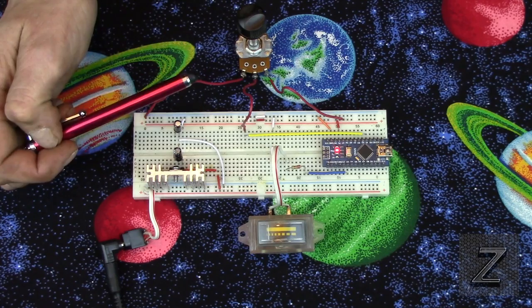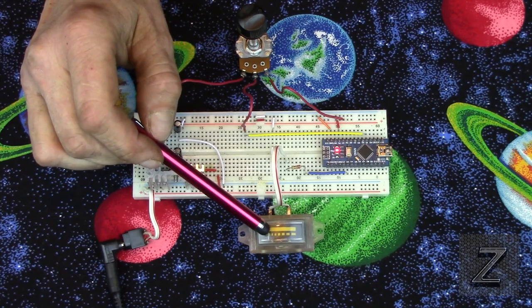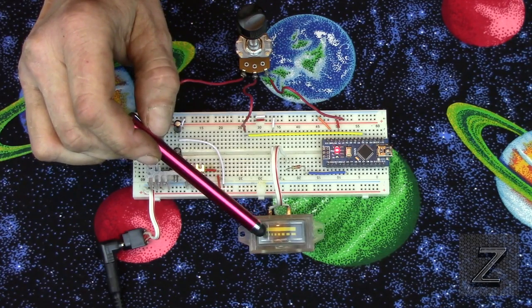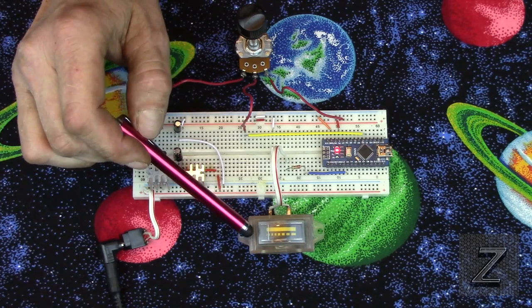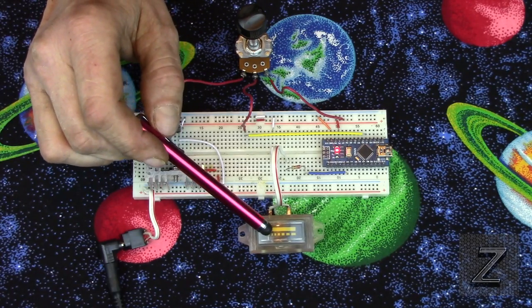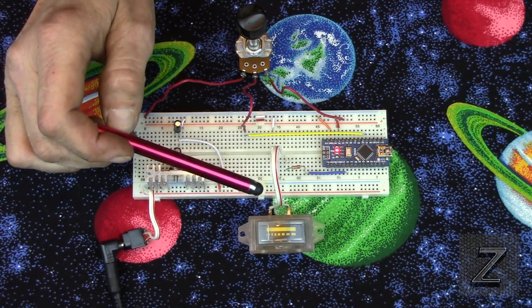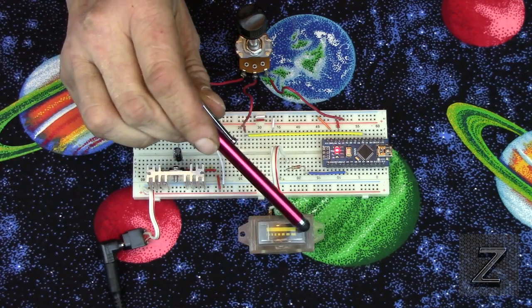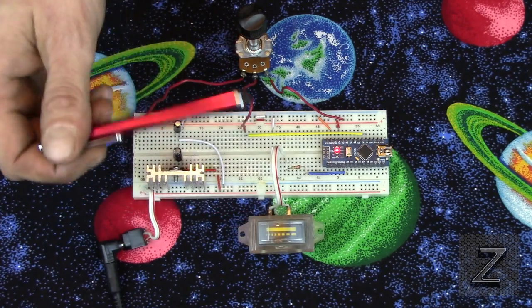LCD screens are much more expensive than an analog meter gauge. These you can get out of old electronics, or you can go online and they're like a dollar, two dollars. I've got a pile of these that I've robbed out of old electronics, and an LCD screen is going to cost you like seven dollars plus. You might not need to know the exact number, just a relative value of it, and that's what this will show you.